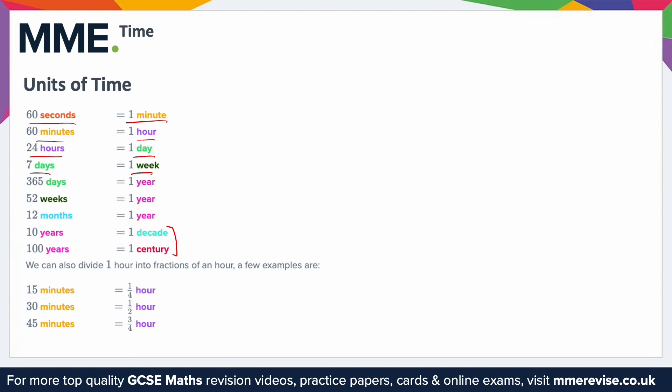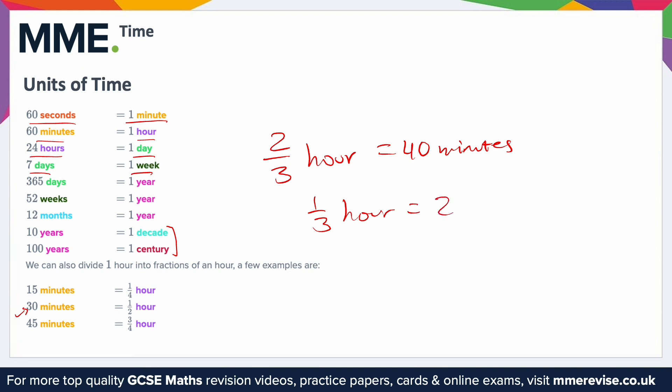We can also split an hour up into fractions of an hour. For example, half an hour is 30 minutes, a quarter of an hour is 15 minutes, and three quarters of an hour is 45 minutes. You can split it into even more fractions: two thirds of an hour is 40 minutes, and one third of an hour is 20 minutes.